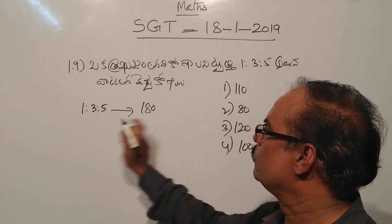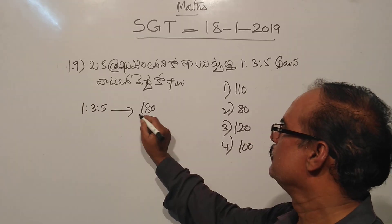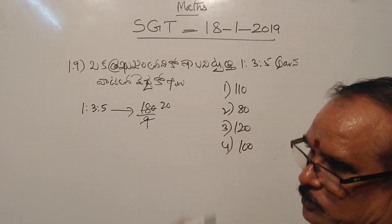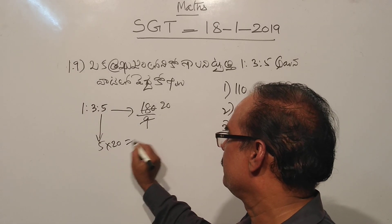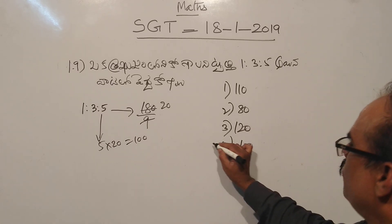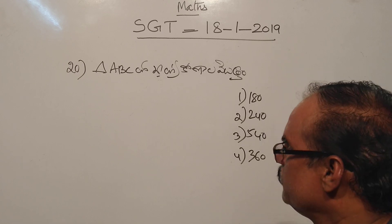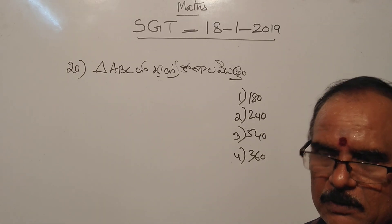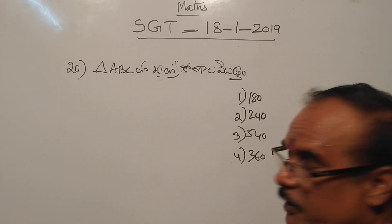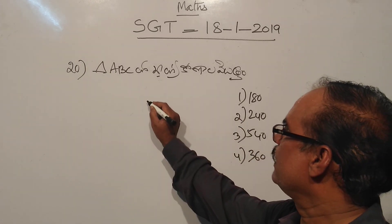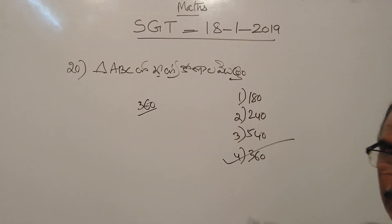So the fourth option is the answer. The next question asks how much the BC of AB is, that is, how much is BABC?